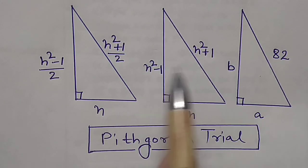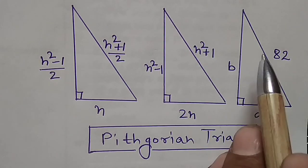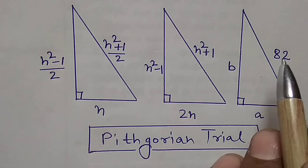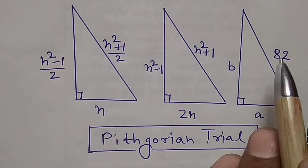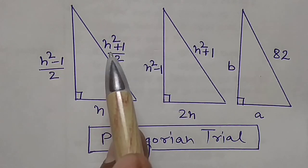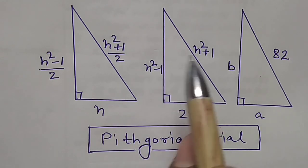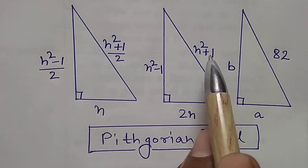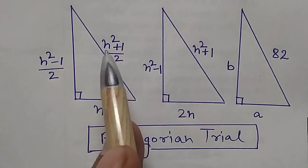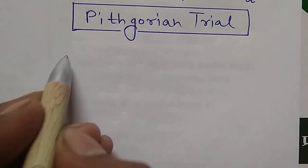Here, the hypotenuse given is 82. We compare this hypotenuse with the formulas (n² + 1)/2 and (n² + 1). First, we compare hypotenuse 82 with (n² + 1)/2.